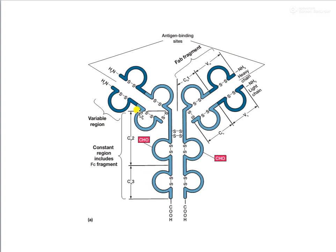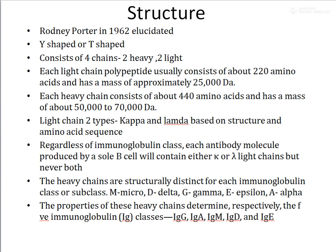The immunoglobulin consists of four chains — this is the first chain, second chain, third chain, and fourth chain — made up of various amino acids, with the heavy chains and light chains linked together. The light chains can be of two types: kappa and lambda, based upon structure and amino acid sequences. Regardless of the immunoglobulin class, each antibody molecule produced by a single B cell will contain either kappa or lambda light chains, but never both.